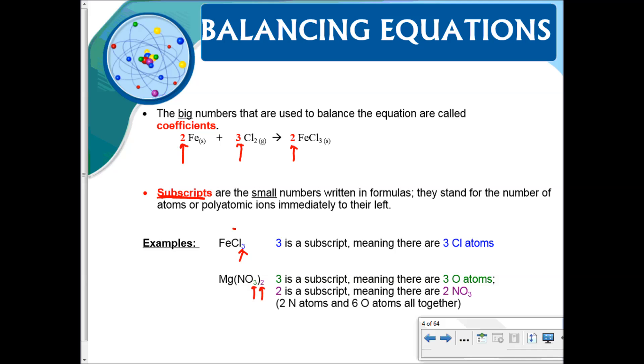We look at this iron 3 chloride, FeCl3, it has an understood 1 here so it means you have one iron and that 3 means that you have three chlorine atoms. We look at this one, there's an understood 1 for the magnesium, there's one magnesium. When we look at the 3 right here that means there's three oxygen, and when we look at this 2, this 2 actually goes with everything in parentheses so there are two nitrogen and two times three, six oxygens.